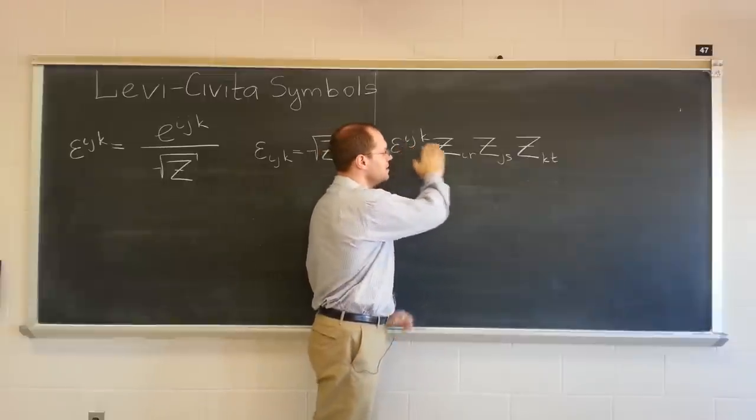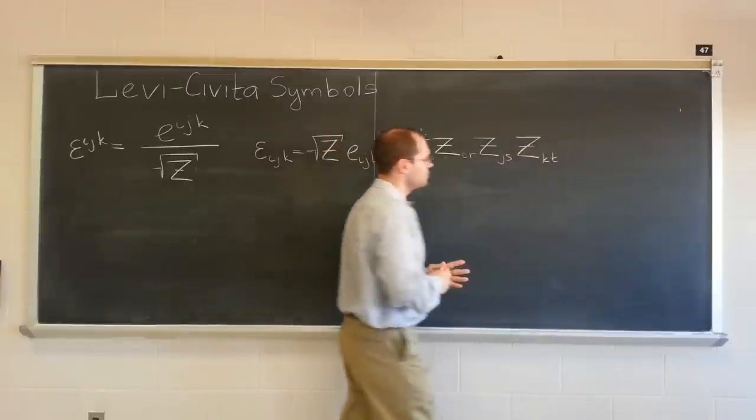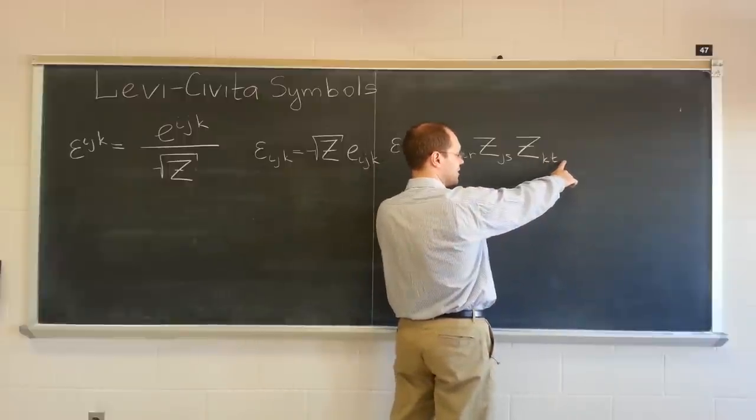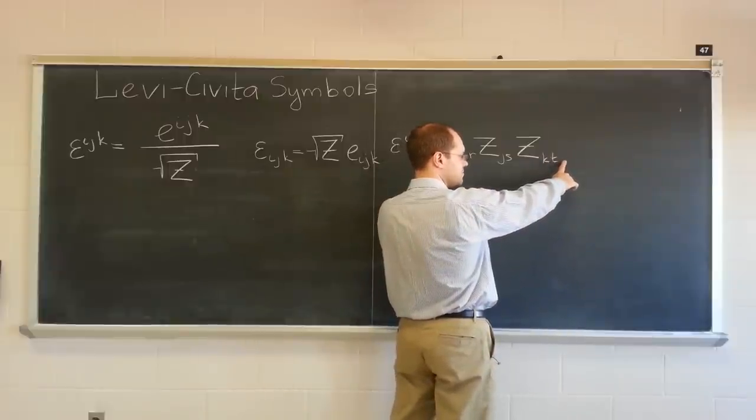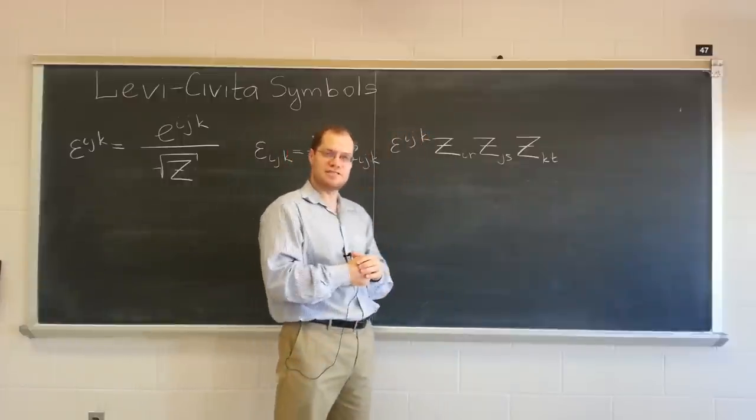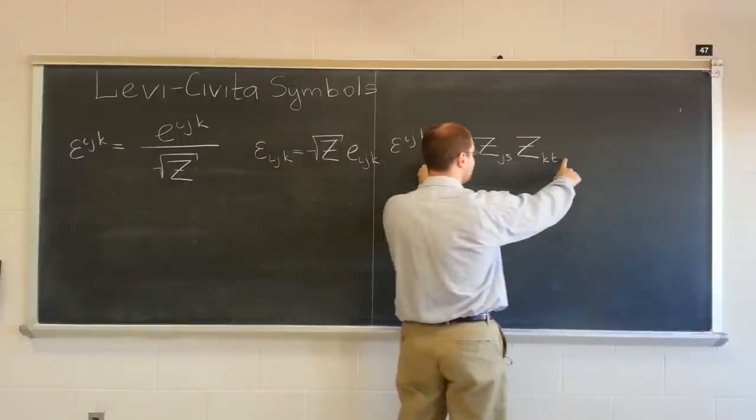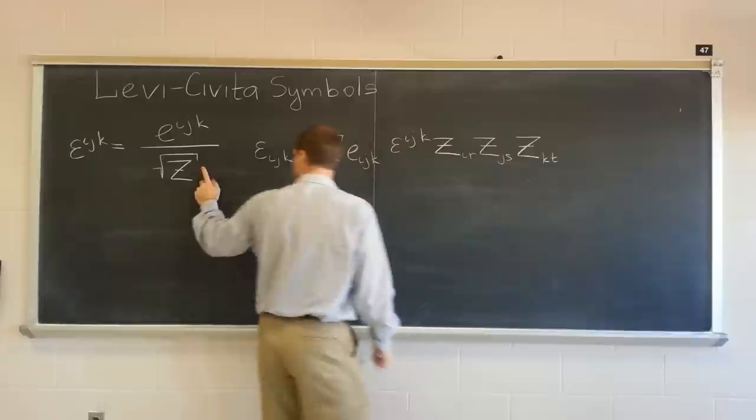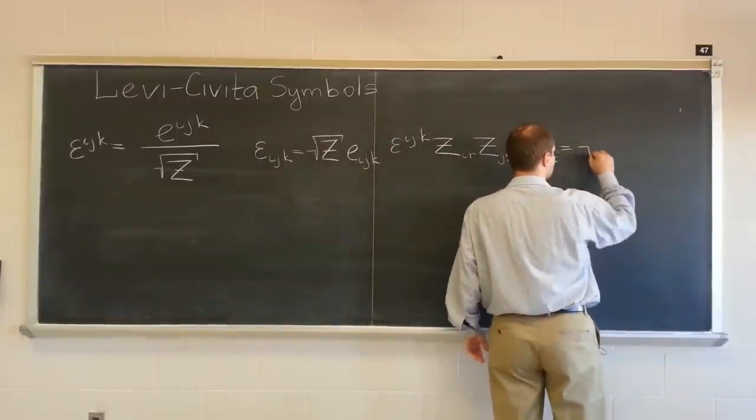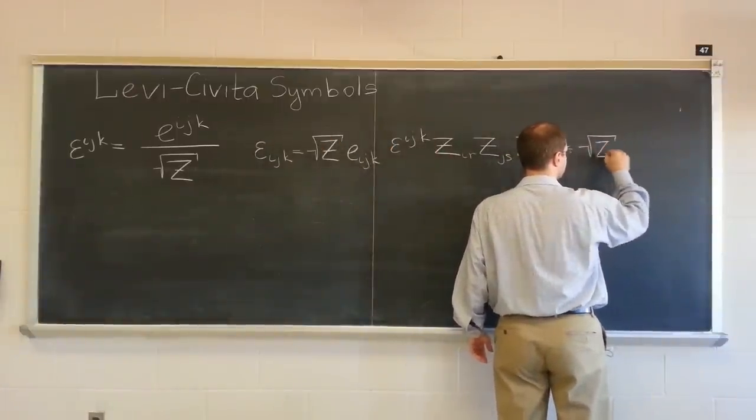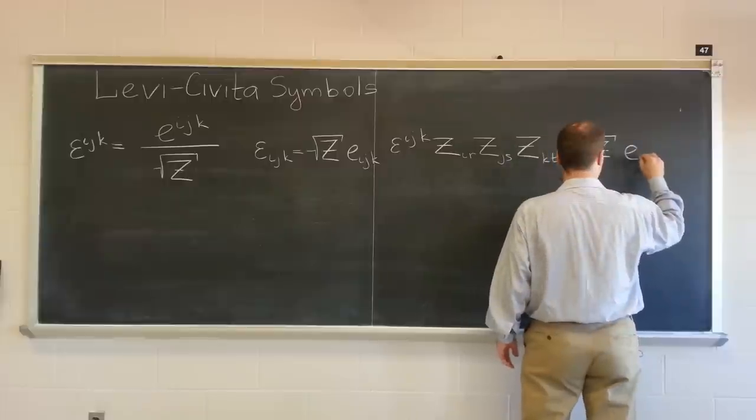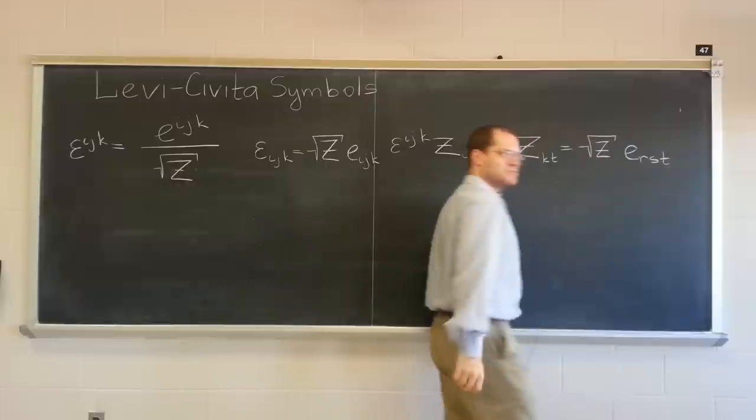The permutation symbol combined with these three terms will produce the determinant of the covariant metric tensor times the permutation symbol. The determinant of the covariant metric tensor will cancel with its square root of z.